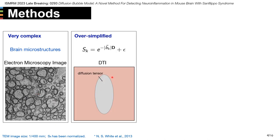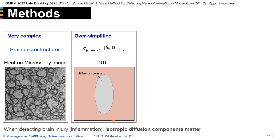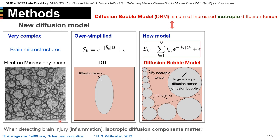Before looking at our new model, let's look at the structures in the brain tissues. Here we can see a very complex microstructure in brain tissues. Just imagine 400 of these kinds of images were put in one diffusion voxel. That's DTI. DTI uses only one diffusion tensor to represent the signals from all the complex structures — it is oversimplified. From previous studies, we know the isotropic diffusion component is one of the keys to detect brain injuries. So we created a new model: it is a sum of isotropic diffusion tensors.